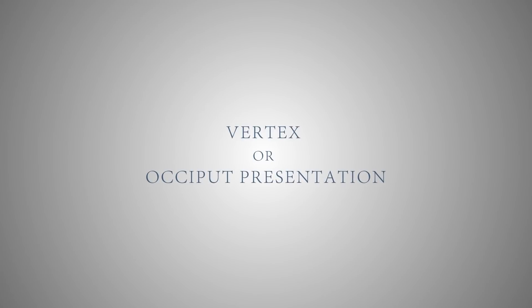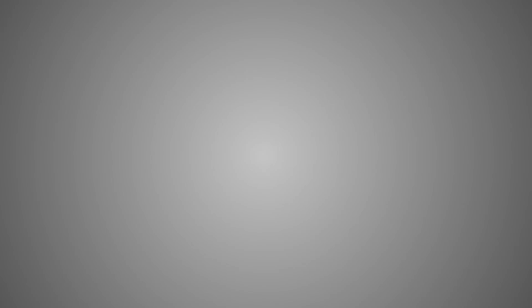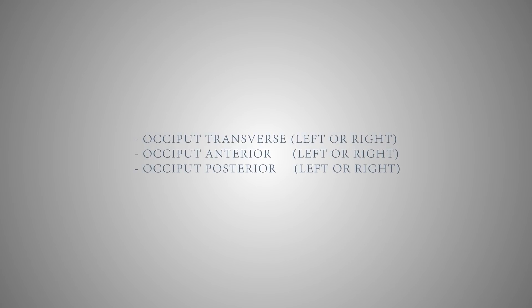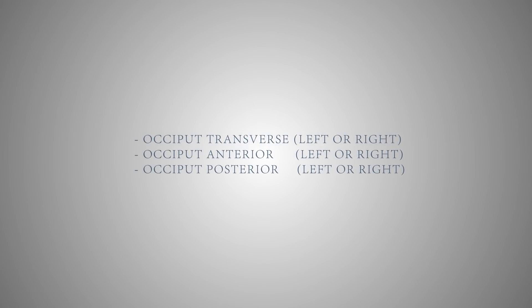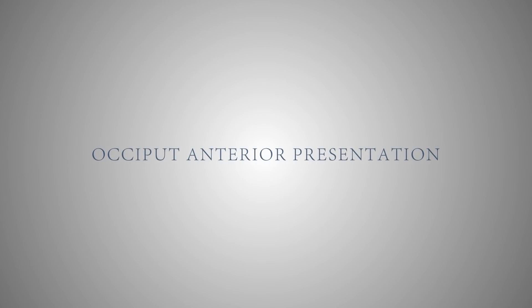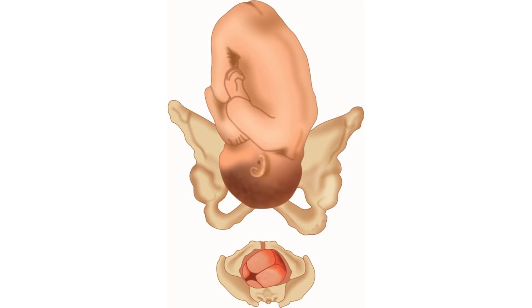Vertex or Occipit Presentation: when the head is completely flexed onto the chest, the smallest diameter of the fetal head presents. In these cases, the occipit is the presenting part, which can be directed anteriorly, posteriorly, or laterally — either to the left or towards the right. In cases of occipit anterior position, on vaginal examination the sagittal sutures lie in one of the oblique diameters of the pelvic inlet.